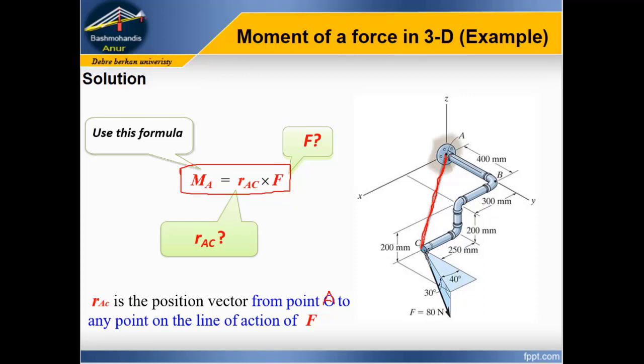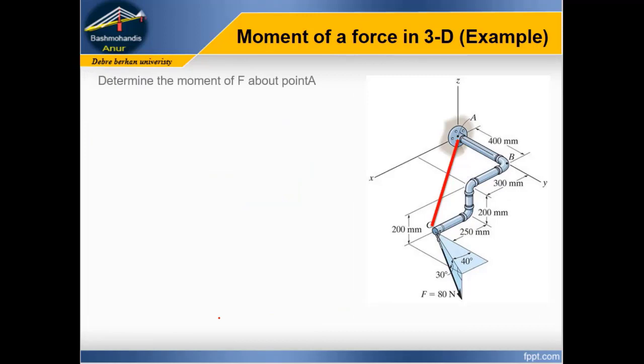This line is the position vector rAC. Therefore, we have to determine position vector rAC and force F in Cartesian form. Finally, cross product to get the moment about point A.